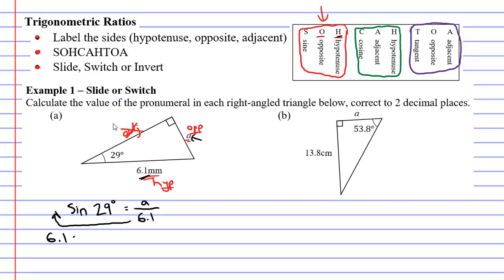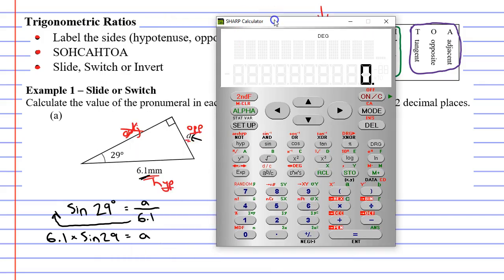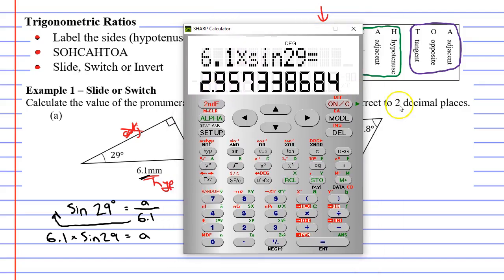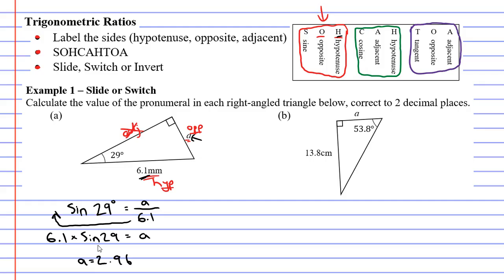That gives us 6.1 at the front times SINE 29 equals A. And once you're at this point we just grab our calculator and work it out. 6.1 times SINE 29 degrees equals. And it gives us 2.957. It wanted a solution to two decimal places so we'll give our solution 2.96. A equals 2.96. And we can see that it's going to be in millimetres because 6.1 was in millimetres. So we've been able to find A.